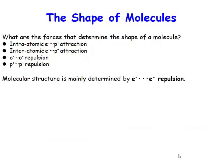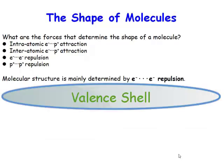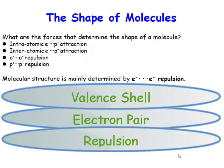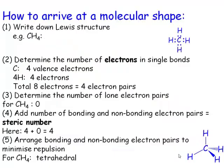What governs the shape of a molecule? Valence-shell electron-pair repulsion. We can predict the shape of a molecule by considering how many electron pairs there are and how they are going to be repelling each other.